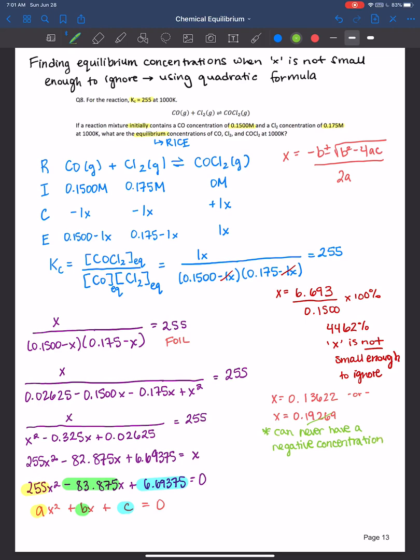So therefore, x must be equal to the 0.13622. And that's what we will plug in here to figure out our equilibrium concentrations. So your final answers should be for the product, you would have a 0.136 molar.